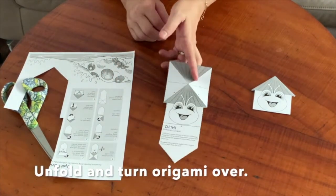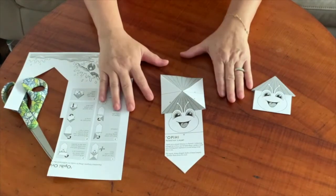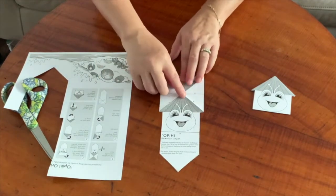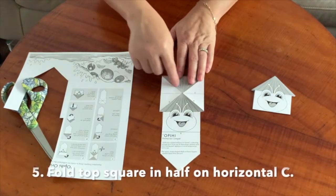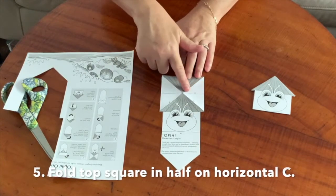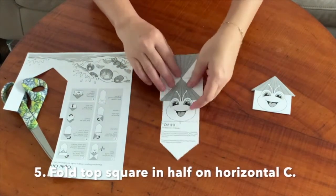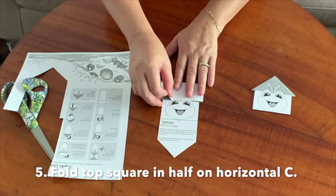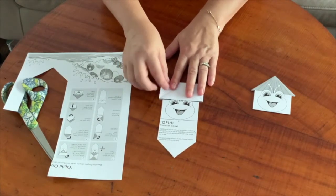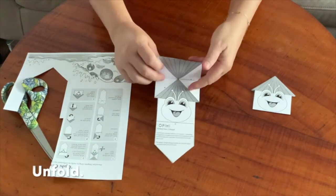Turn your origami over so that the printed side is facing up. Now you're going to fold the upper square or shell of the origami in half along line C. Just fold it down with the printed side up and open it up.